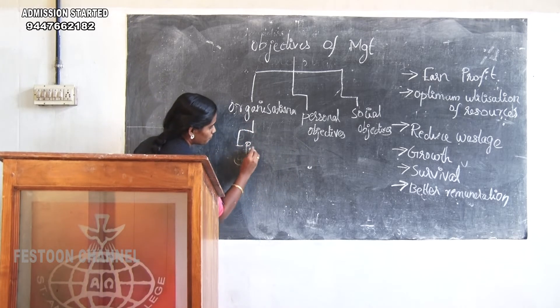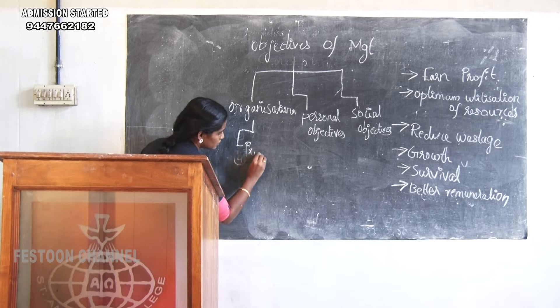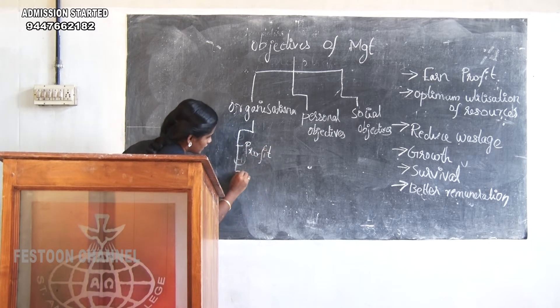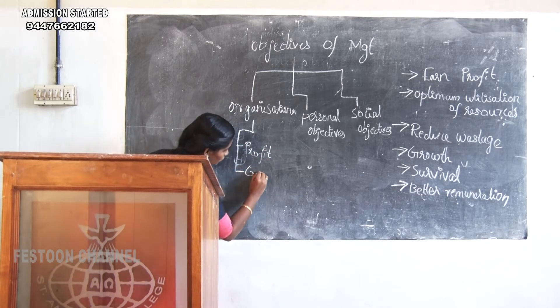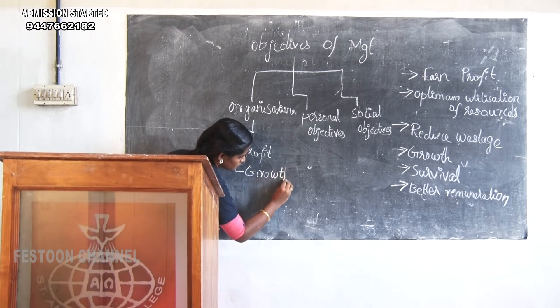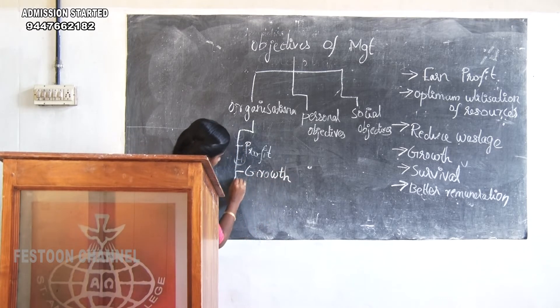These organizational objectives include three sub-objectives. The first one is profit, the second one is growth, and the third one is survival.